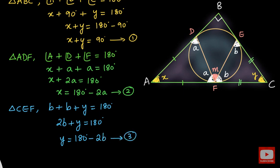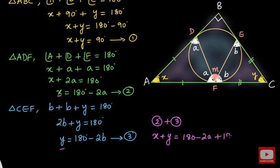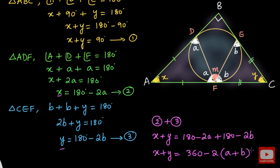Now let us add result number 2 and result number 3. The left side parts are X and Y, so we get X plus Y on the left side. The right side gives 180 minus 2A plus 180 minus 2B. Simplifying: X plus Y equals 360 minus 2A minus 2B, which is 360 minus 2 times (A plus B). Let me take this as result number 4.